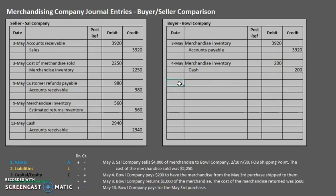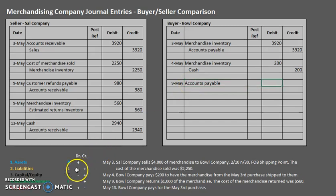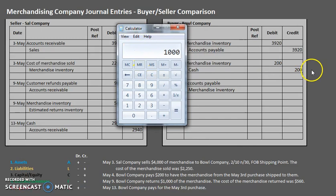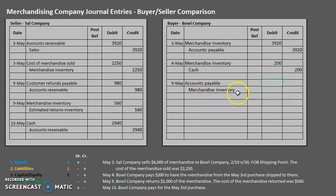On May 9th, the buyer returns $1,000 of the merchandise. We simply have a decrease to the amount they owe: debit Accounts Payable to make it go down, and a decrease to the company's Merchandise Inventory. Using the net method, we assume they exercise the 2% discount, so when they return $1,000 of merchandise, they are only returning $980 — accounting for the 2% discount — so $980 is used for this entry.